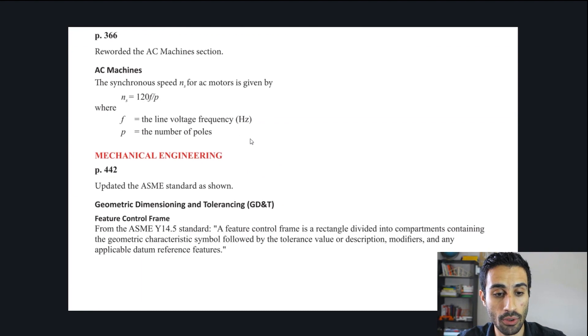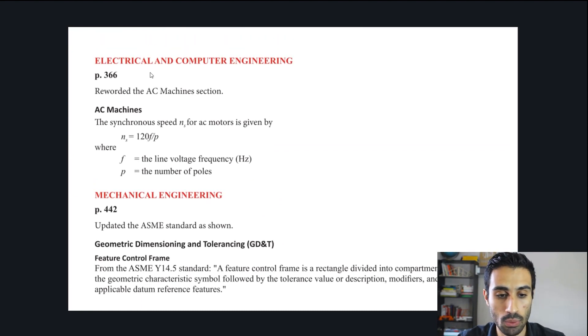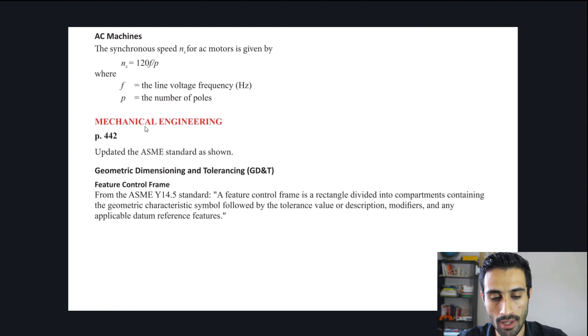Other than that, we can proceed and look at the electrical. There isn't really much going on the page 366. They reworded the word AC machines. Then they put AC machines section. Then they put this equation that looks quite simple to use, but I'm not sure. I'm not doing electrical here, but that's that.